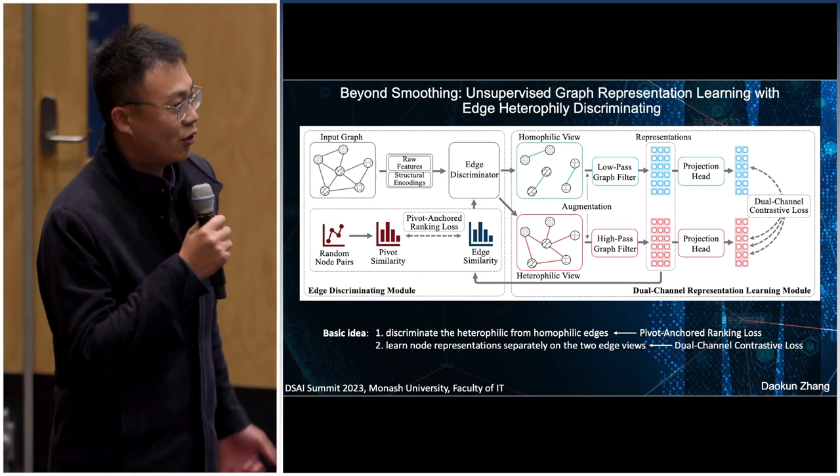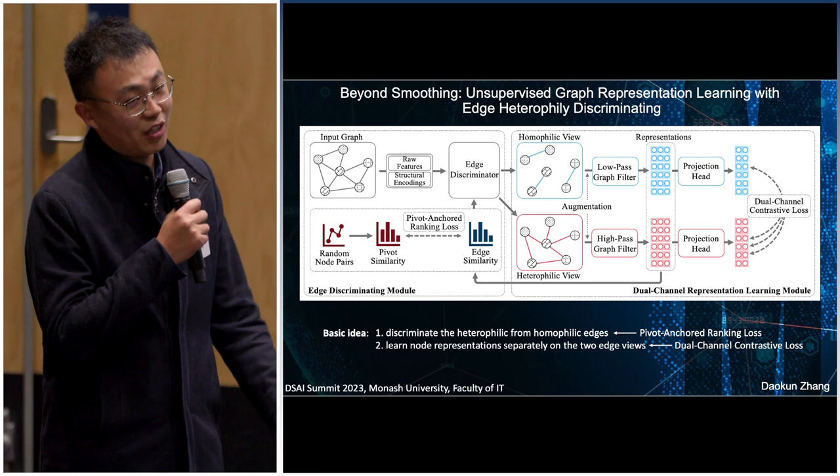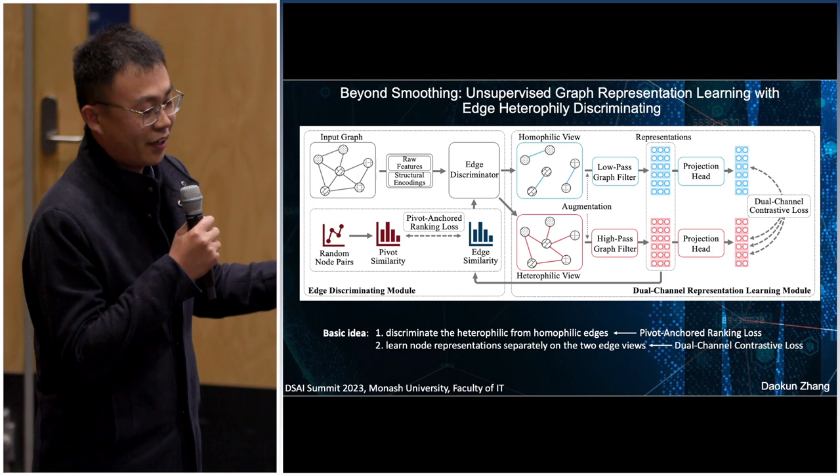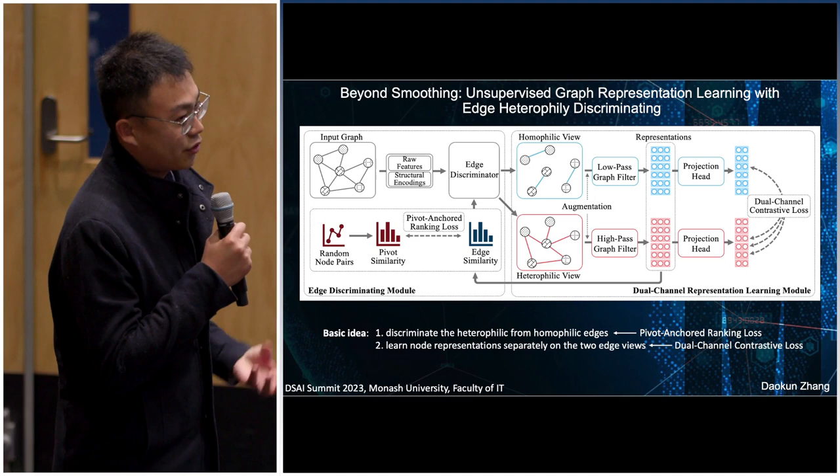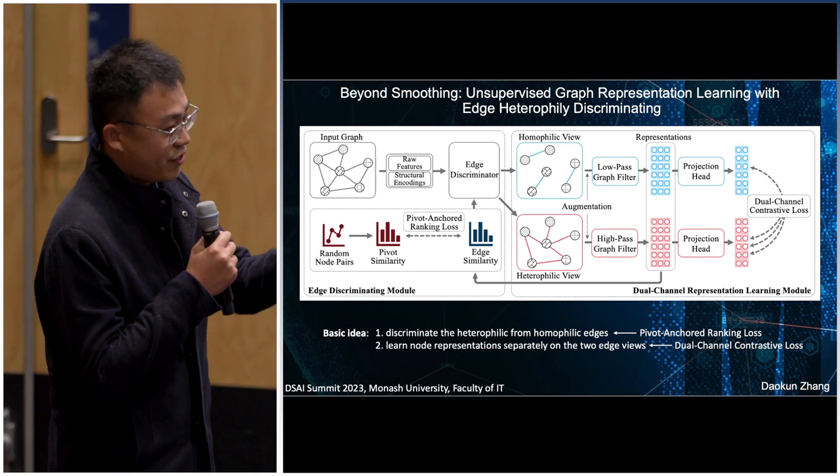This topic is about graph neural networks. Graph convolutional networks are considered the most powerful neural network architecture for handling graph-structured data. They use feature smoothing, also called neighborhood aggregation or message passing, to construct node representations by aggregating the features of neighbors to reinforce the central node representations.